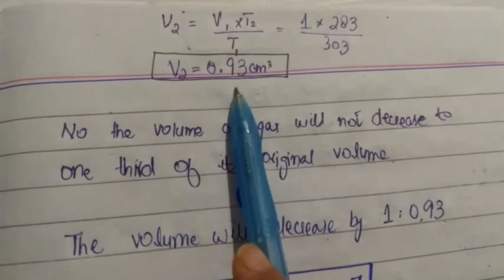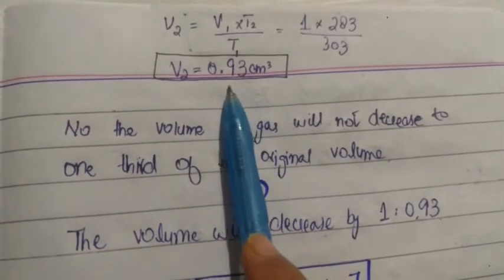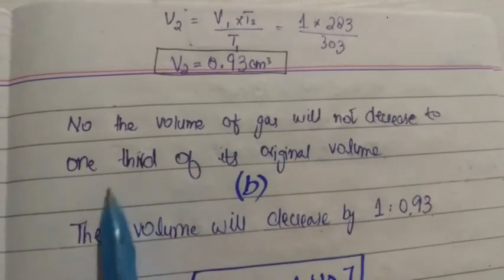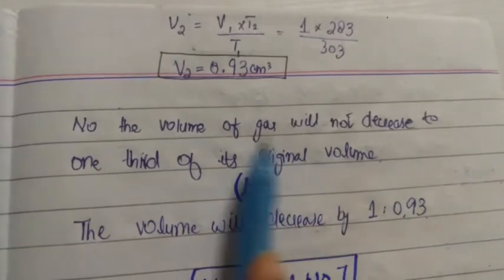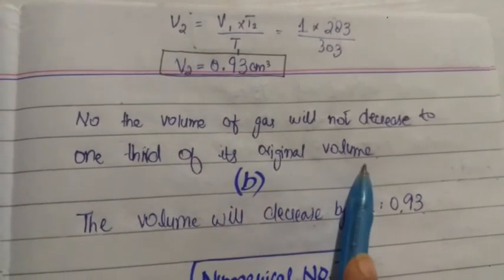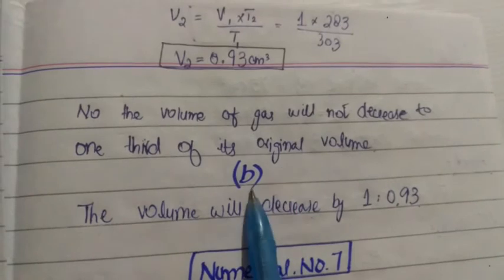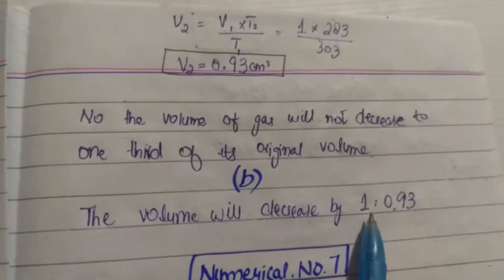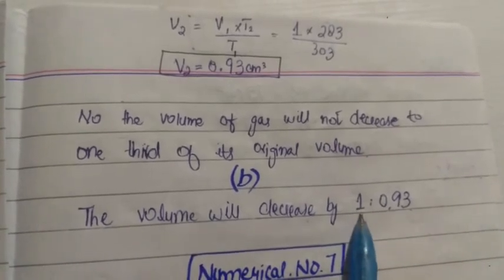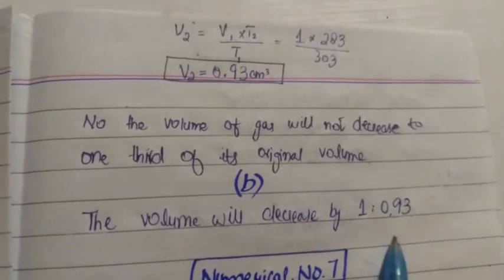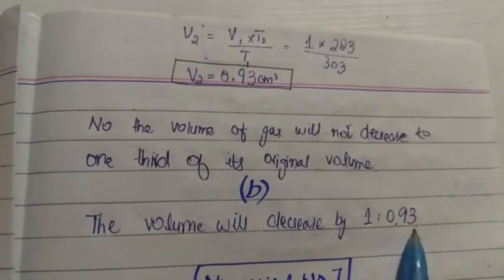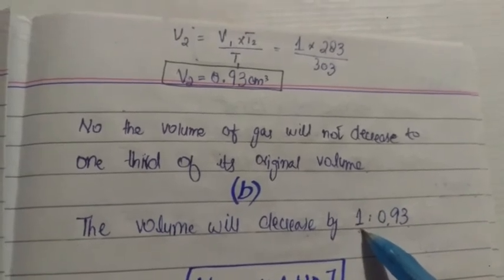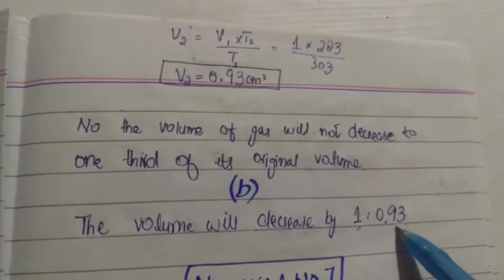So here the decrease is not one third. No, the volume of the gas will not decrease to one third of its original volume. So this is the answer to part A - there is not one third decrease. And in part B, if there is not one third decrease, then what is the ratio? Here the ratio is 1 to 0.93. v1 and v2 is 0.93. In this ratio, the initial volume was 1, temperature decreased and the volume became 0.93.